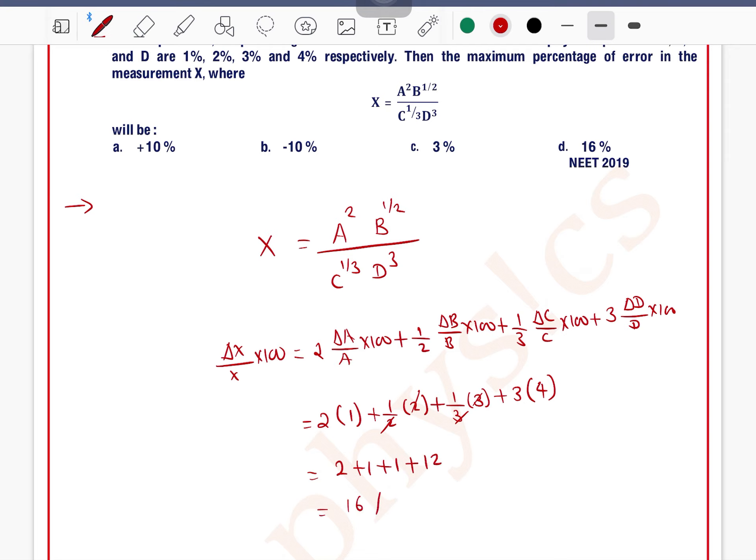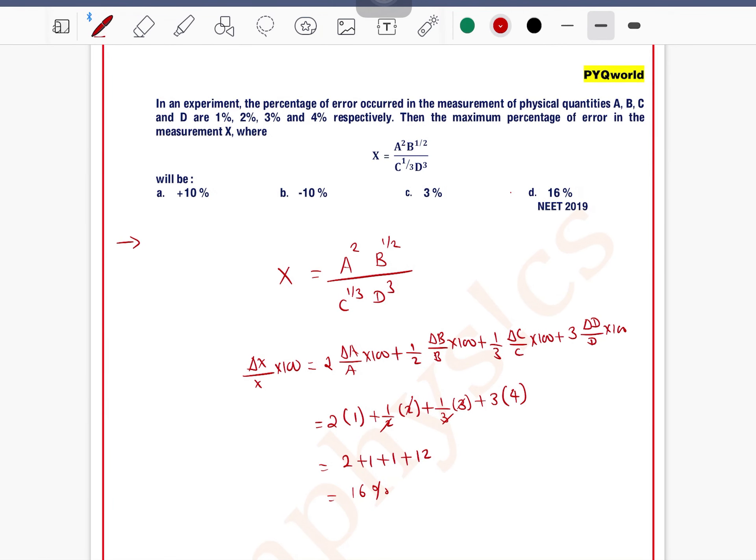16%. So 16% means option D, option D is the correct one.